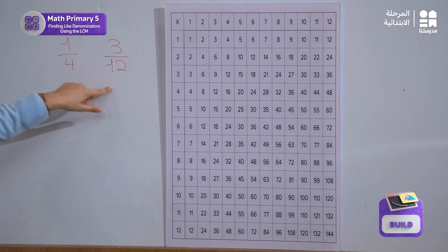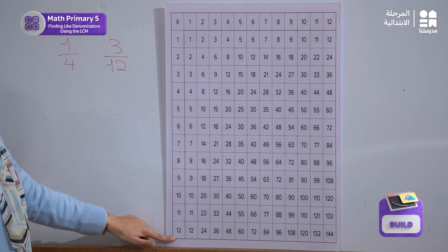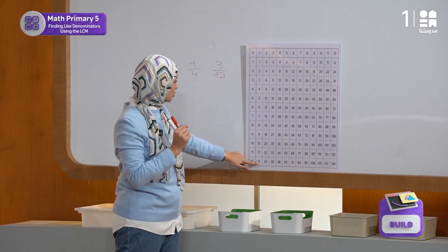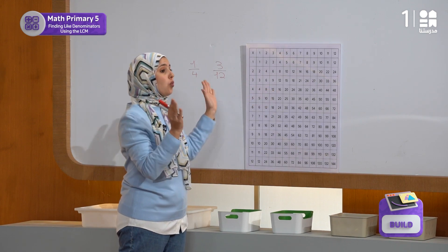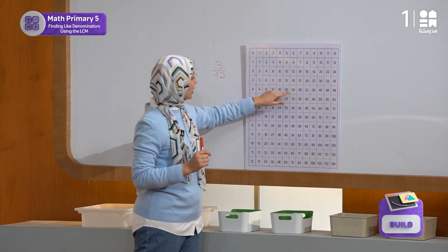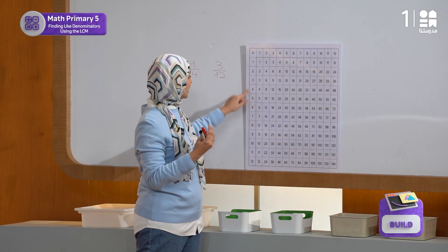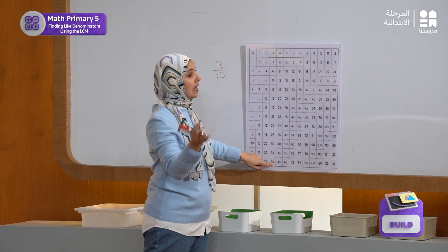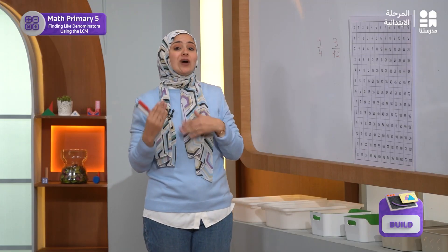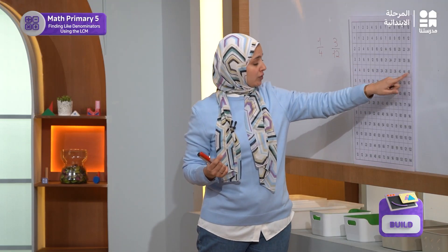If I look at 4 and 12 over here, the first common multiple is going to be 12. We are also going to find 24, then 36, and so on. We will also find 48, and so on.